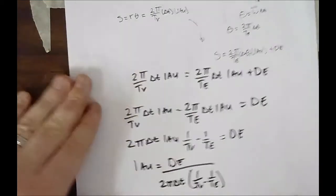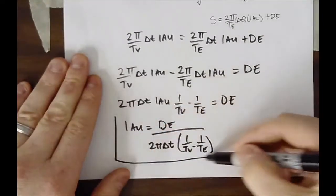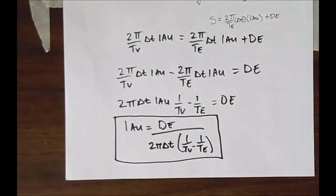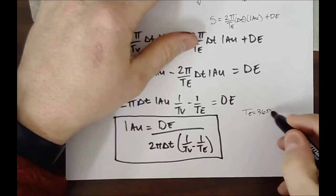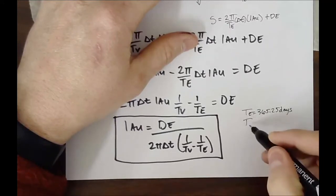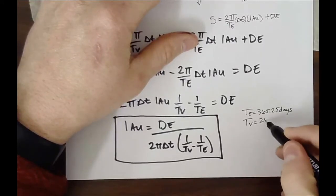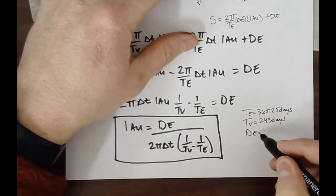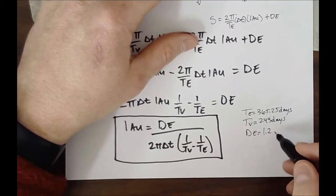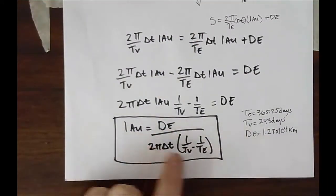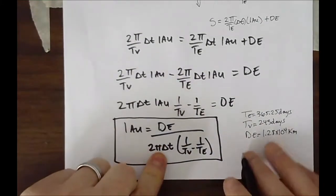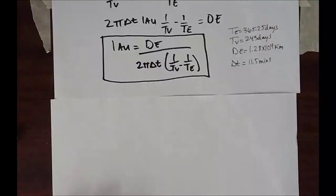This is a very important equation. This is the equation we used to calculate what one astronomical unit was. Now, all we have to know is some simple numbers. The period of Earth is easy. It's 365 and a quarter days. The period of Venus is 243 days. The diameter of Earth is 1.28 times 10 to the 4th kilometers. So we know the diameter of the Earth. We know these two periods and boom. We can now, our delta T. Now, the last time this happened, the transit was, I think, was in 2012.